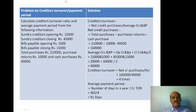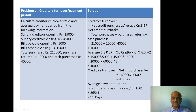Creditor turnover ratio is based on purchases, just as debtor turnover ratio is based on sales. Creditor turnover ratio equals net credit purchases divided by average creditors and bills payable. Net credit purchases formula: total purchases minus purchase returns minus cash purchases. So: 2,10,000 minus 10,000 minus 40,000 equals 1,60,000. Net credit purchases are 1,60,000.